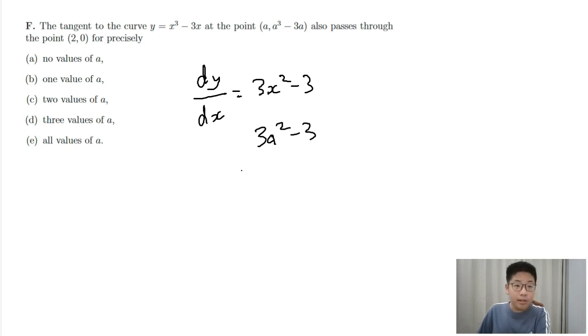So the equation is y equals 3a squared minus 3 times x minus a plus a cubed minus 3a, if you know your line formula.